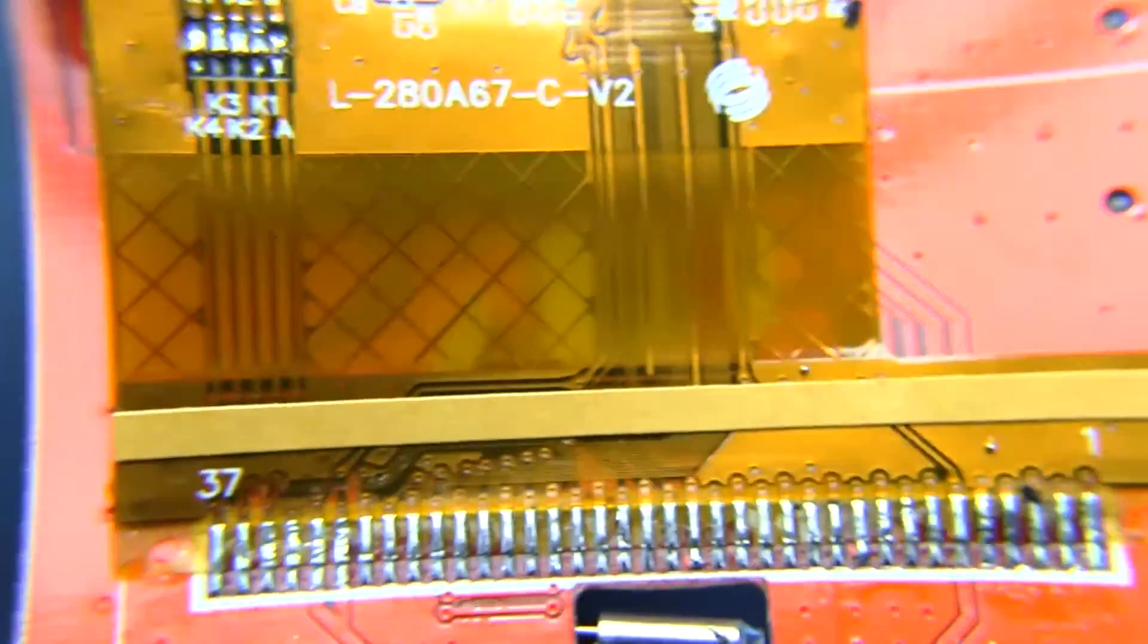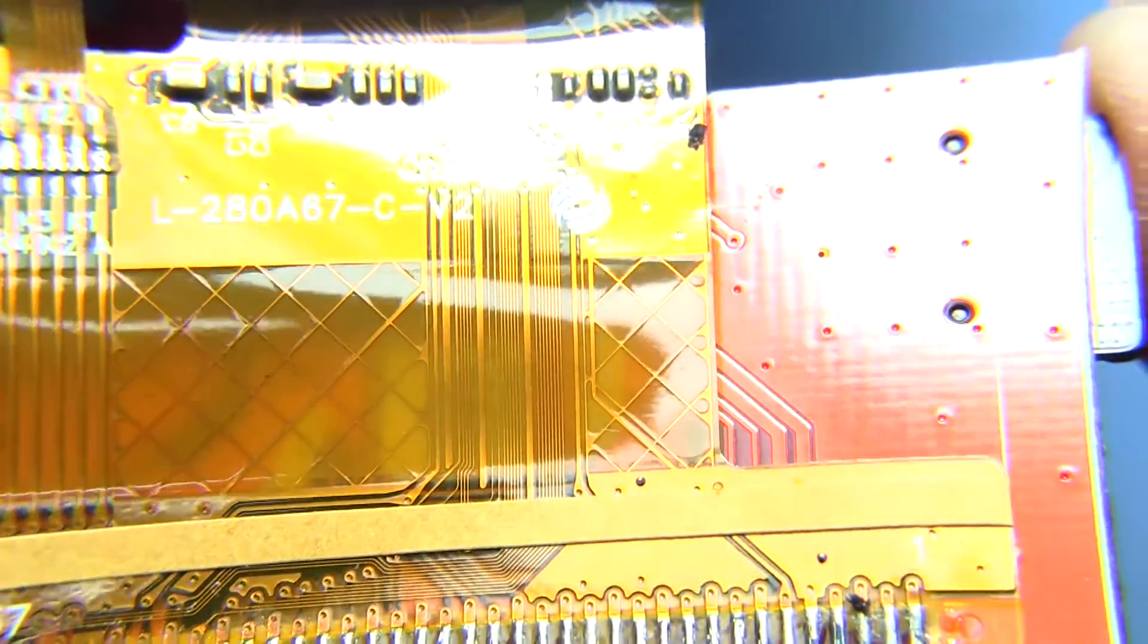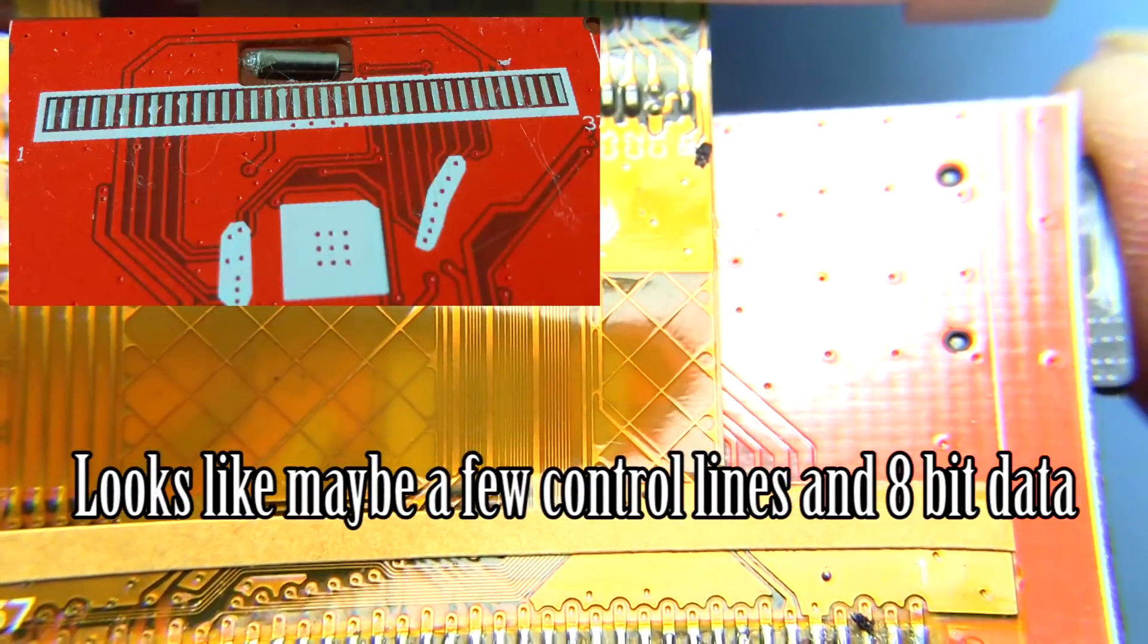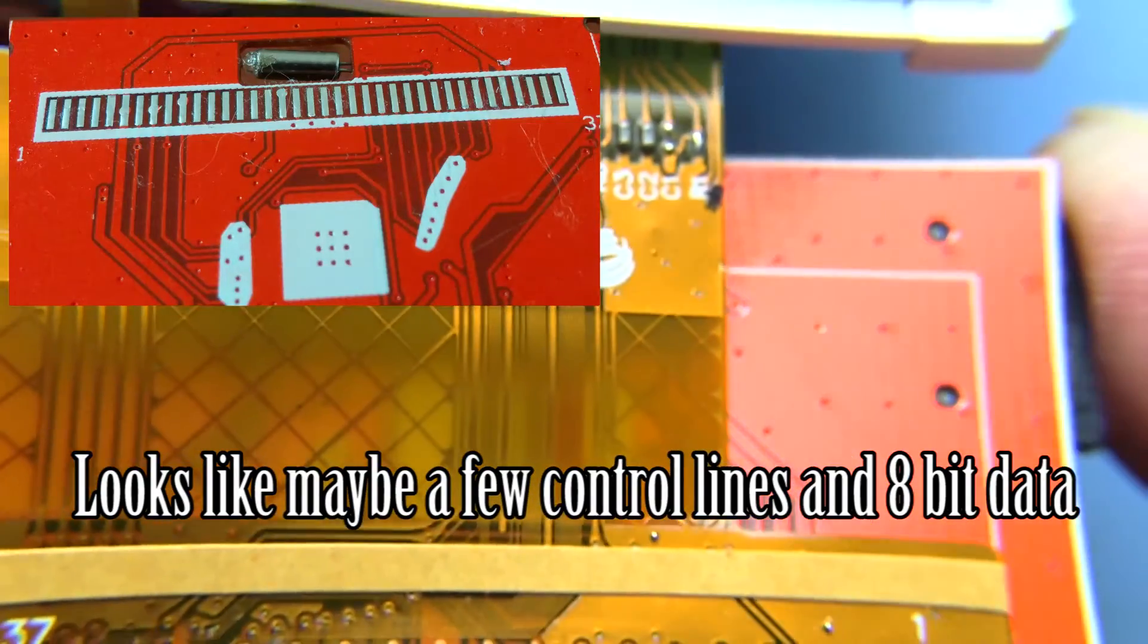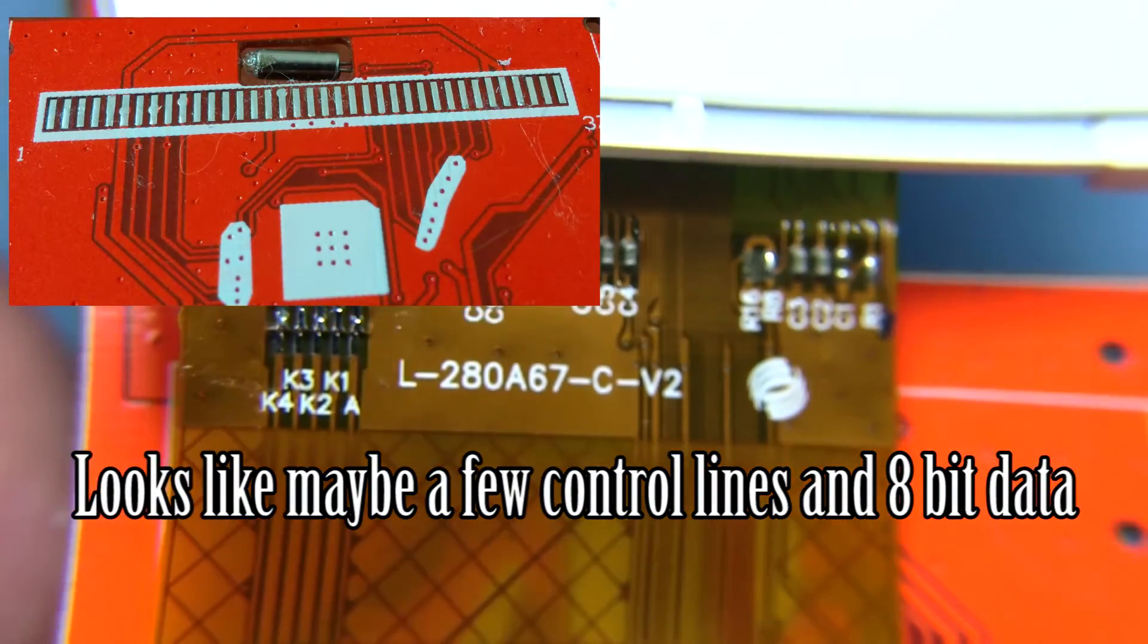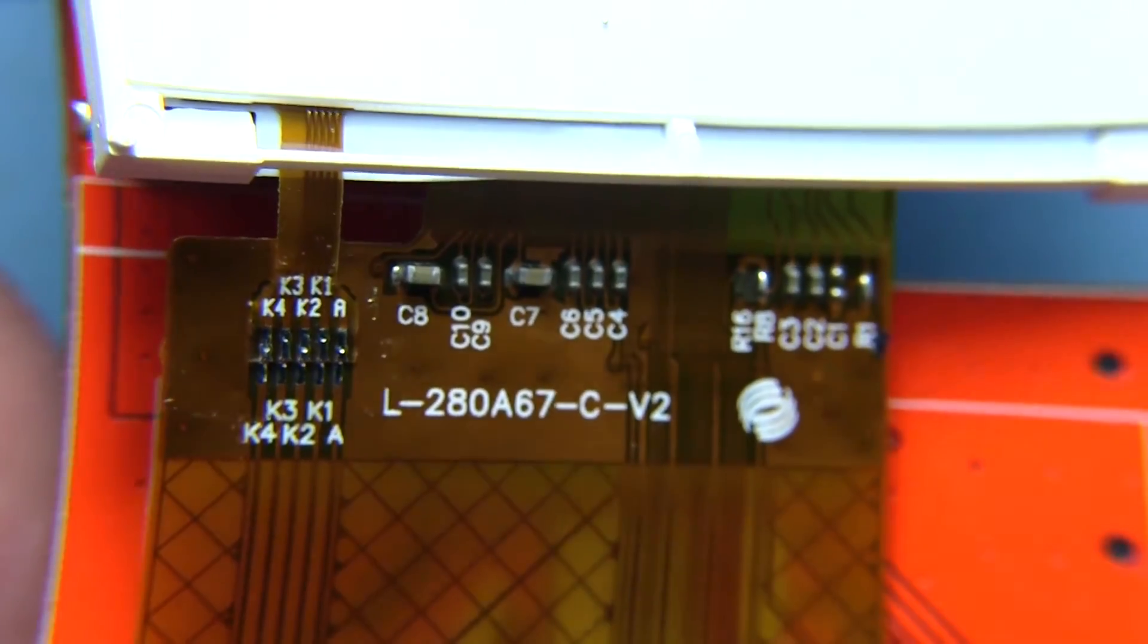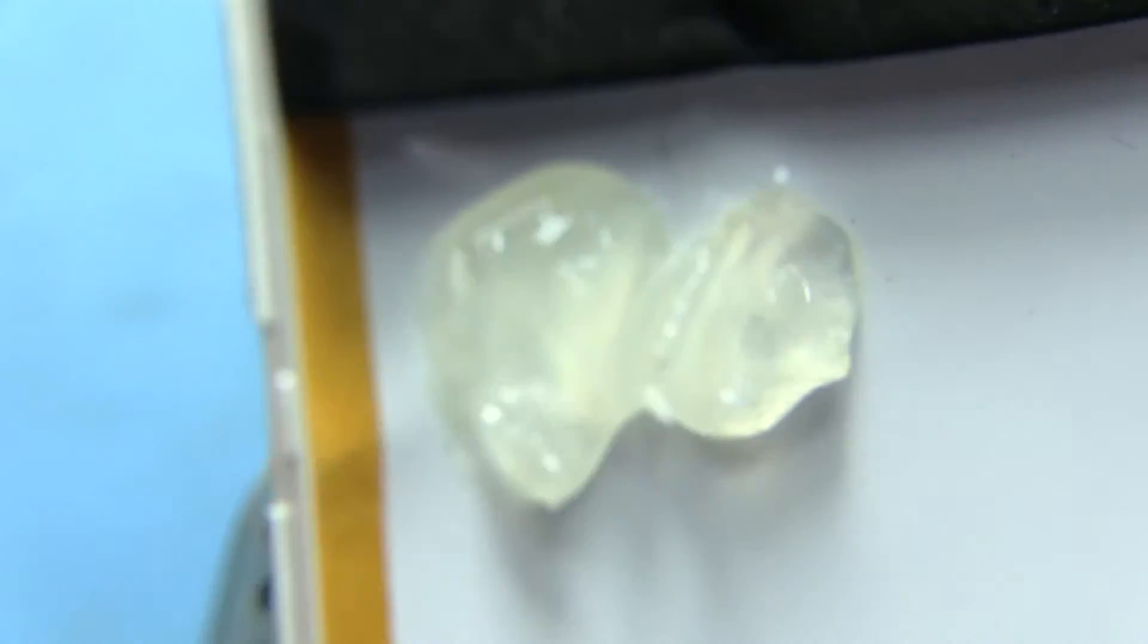I'm wondering how much, how many bits of data they're actually using there. It looks to be, it's really tiny tiny traces on that thing, but there seem to be too many. So yeah, it looks like they're using a parallel connection maybe to that. I'm wondering if we can actually find any info on this LCD, maybe it's something that would be really easy to be using with something else. There's our bit of hot glue there.